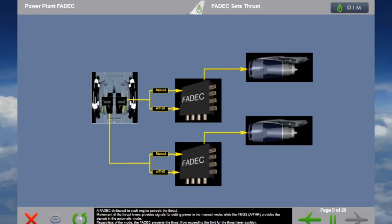A FADEC dedicated to each engine controls the thrust. Movement of the thrust levers provides signals for setting power in manual mode, while the FMGS auto thrust provides signals in automatic mode. Regardless of the mode, the FADEC prevents thrust from exceeding the limit for the thrust lever position.